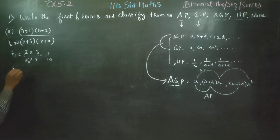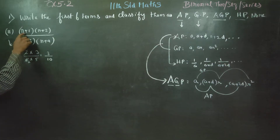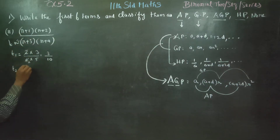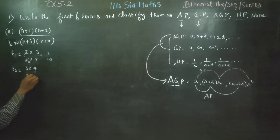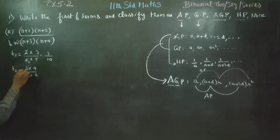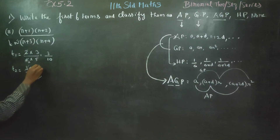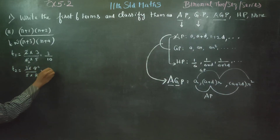Coming to the second term, t2. Substituting n=2: (2+1)(2+2)(2+3)(2+4) = 3 × 4 × 5 × 6. Cancel 2 times and 2 times. Therefore, your answer for t2 will be 2 by 5.